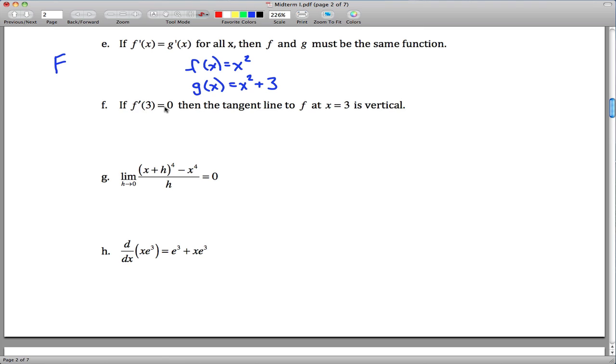Part F: if f'(3) equals 0, then the tangent line to f at x equals 3 is vertical. This is false. It's almost true. This tangent line at this point would be horizontal. Horizontal is not vertical, so it's false.